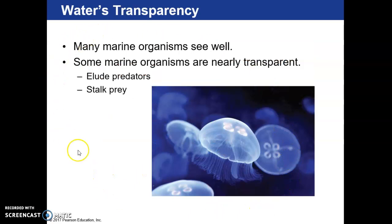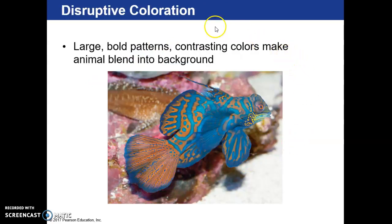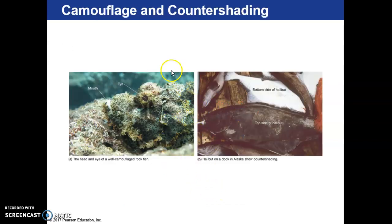Water's transparency means some creatures have adapted to be clear, which helps them elude predators and stalk prey. Camouflage involves color patterns that match surroundings, while counter-shading means dark on top and light on bottom. Disruptive coloration is similar to camouflage but acts more as a distraction than a blending in. An example of camouflage is the rockfish blending in with its surroundings, and counter-shading is seen on a halibut — dark on the top side and light on the bottom.